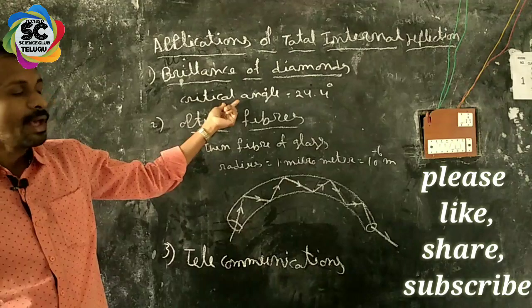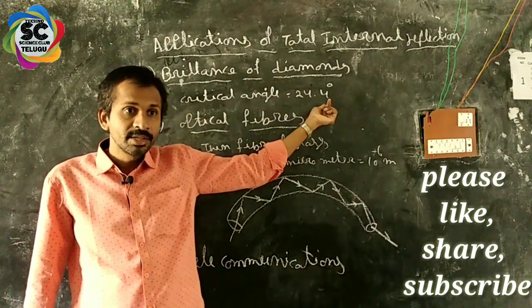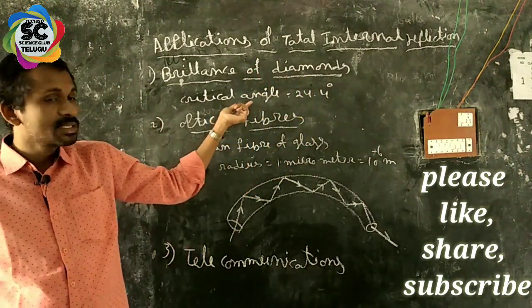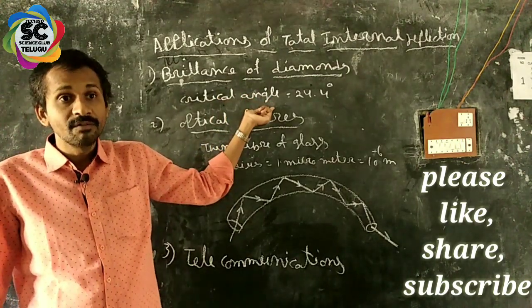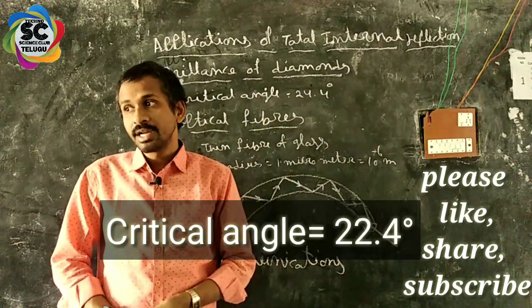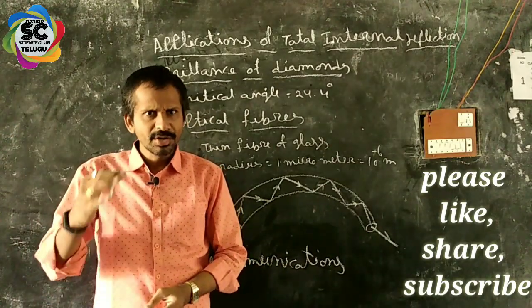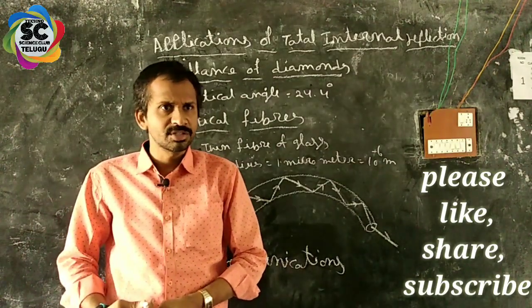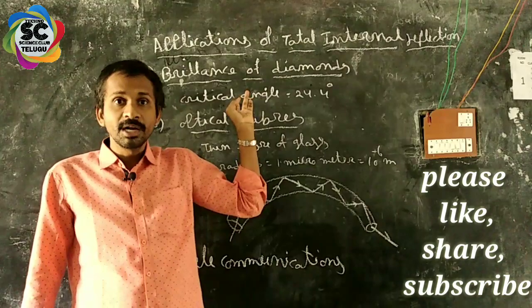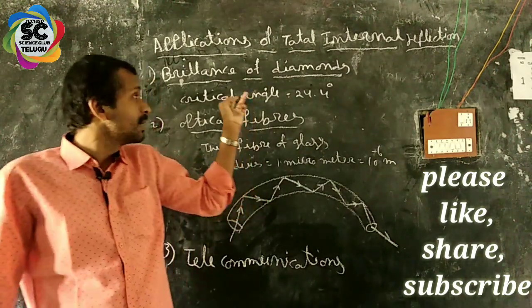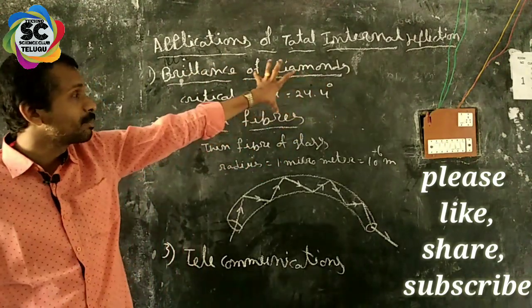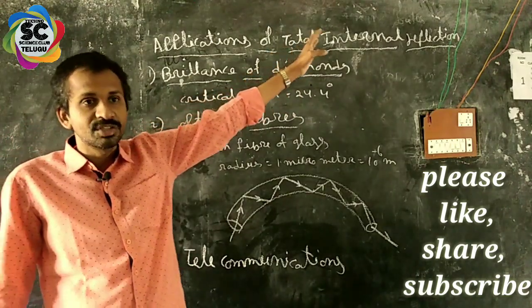Because diamond has a critical angle of 24.4 degrees. Diamond has a very small critical angle. Because of this small critical angle, light undergoes total internal reflections inside the diamond. Because of these multiple total internal reflections, the diamond is very glowing and has brilliance. This is one of the applications of total internal reflection.